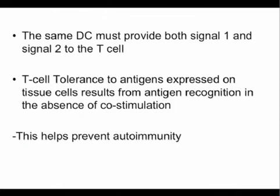The same dendritic cell needs to provide signal 1 and signal 2 to a particular T cell. If a T cell gets signal 1 but gets signal 2 from someplace else — another dendritic cell that might be activated and contain a different antigen — you don't want cross-reactivity to happen. So it's just another layer of specificity to stop autoimmune responses occurring.